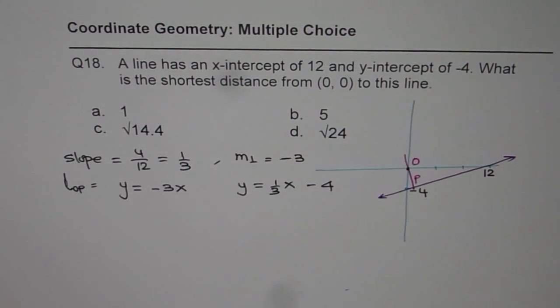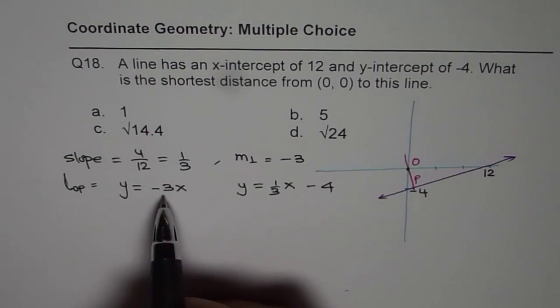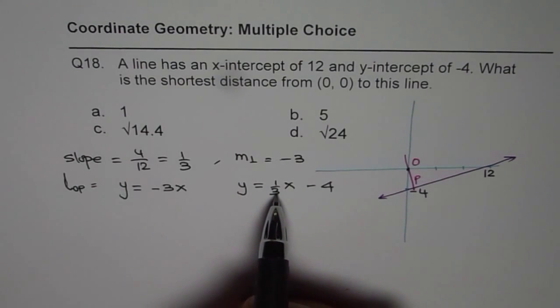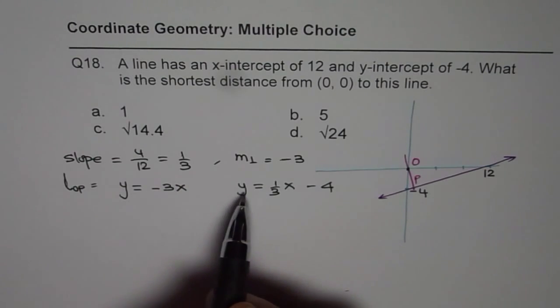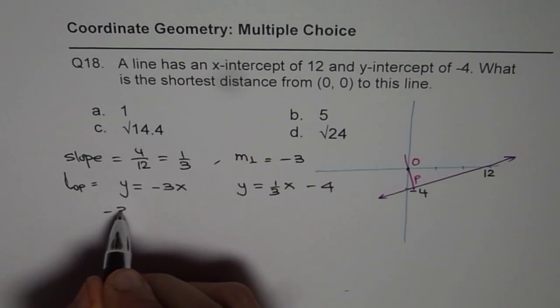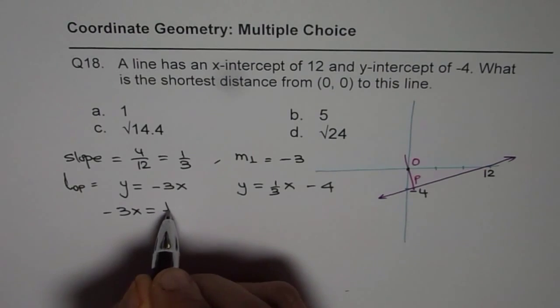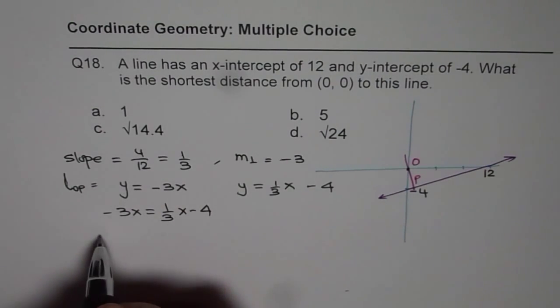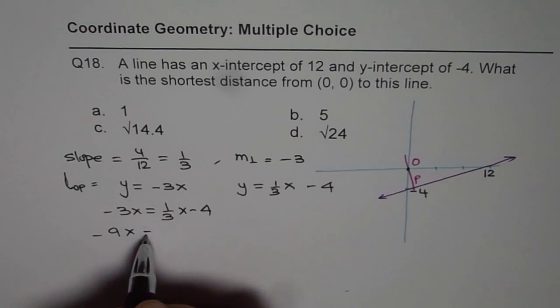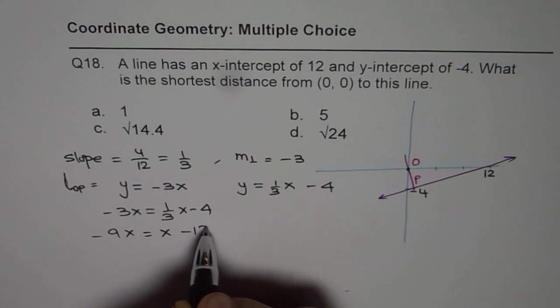So these are the two equations. This is perpendicular to the other line. We need to find point of intersection. So let's replace y with minus 3x. So we have minus 3x equals 1 over 3x minus 4. Now let's solve for it. So we have minus 9x equals x minus 12.